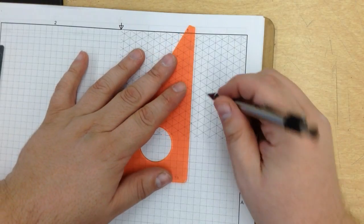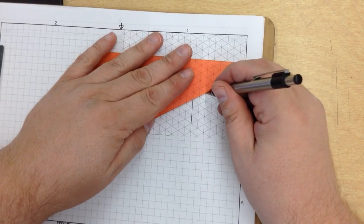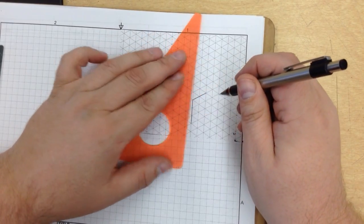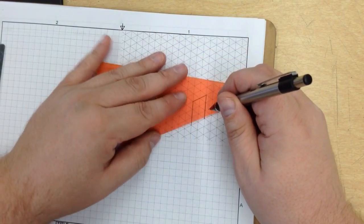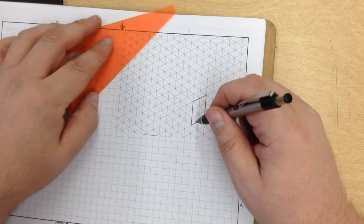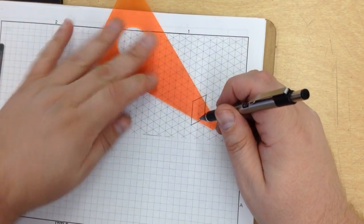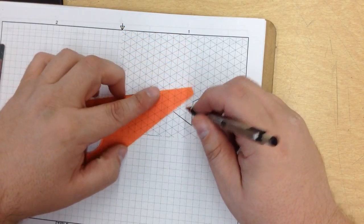And this shape goes 3 up, goes 2 over, goes 3 down, and then we just close the square. Now from there goes 3 over, 2 out, and then 1, 2, 3, 4, 5, 6 back.